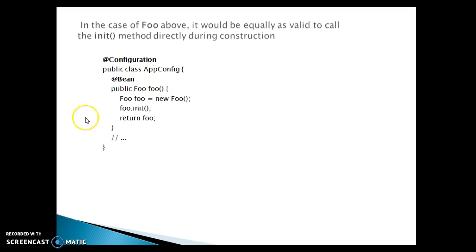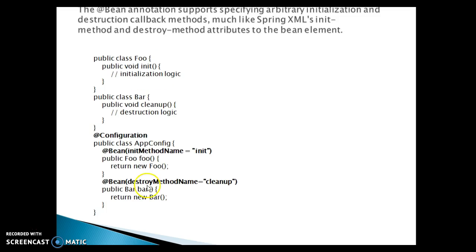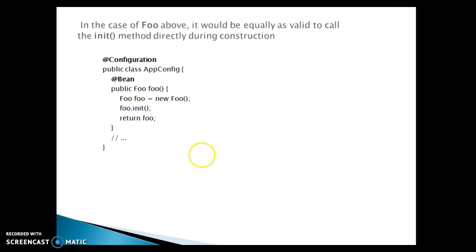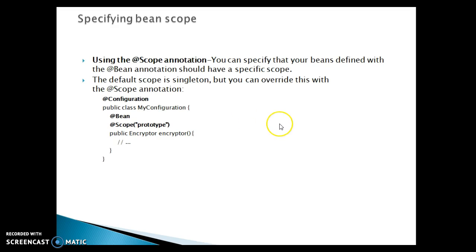If you do not call it explicitly, the @Bean annotation has an attribute called initMethodName where you can specify the method name and it will be called by the container. Now, how can we specify a bean scope using Spring Java-based configuration? Using the @Scope annotation you can specify that beans defined with @Bean should have a specific scope. The default scope is singleton.